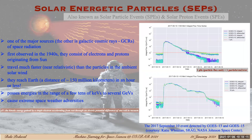Solar energetic particles, SEPs for short, are highly energetic particles coming from the Sun and contributing largely to the space radiation environment. Another major source is the galactic cosmic rays, but we will not be addressing that today. First observed in the 1940s, SEPs consist mainly of electrons and protons traveling much faster than the particles in the background solar wind, often attaining relativistic velocities.